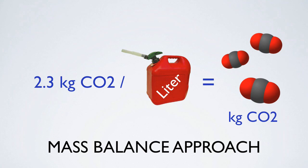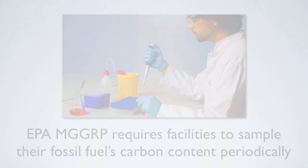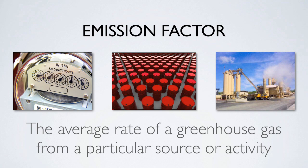The only variance is that in some cases, mandatory programs such as the EPA's mandatory greenhouse gas reporting rule require facilities to sample their fossil fuels periodically, in order to capture any variation in the fuel's carbon content over time. When it comes to calculating greenhouse gas emissions, the most common approach is the use of documented emission factors. An emission factor is defined as the average emissions rate of a greenhouse gas from a particular source or activity. Emission factors are calculated ratios that relate greenhouse gas emissions to a determined amount of activity at an emissions source.